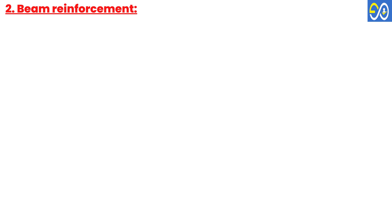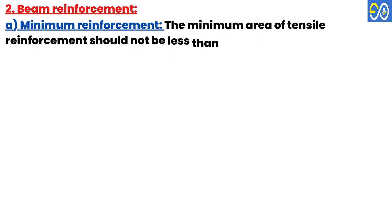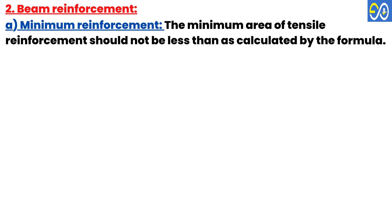Beam Reinforcement: Minimum Reinforcement — The minimum area of tensile reinforcement should not be less than that calculated by the formula: A_s = 0.85 × B × D / f_y.